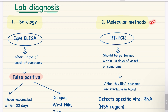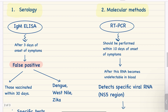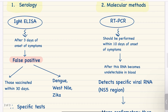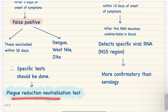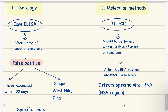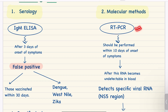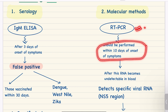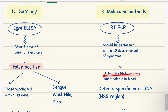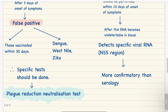For lab diagnosis we have two tests: serology and molecular methods. In serology, we perform IgM ELISA, which is done three days after onset of symptoms. It can be false positive in those vaccinated within 30 days and in cases of Dengue, West Nile, and Zika, so specific tests like Plaque Reduction Neutralization Test should be done. For molecular methods, RT-PCR should be performed within 10 days of onset of symptoms, as after this RNA becomes undetectable in blood. RT-PCR detects specific viral RNA — the NS5 region — and is more confirmatory than serology.